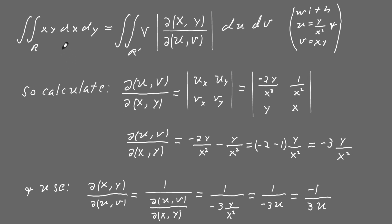Now we want to evaluate this integral over that region. The formula tells us we have to put the integrand in terms of u and v. Fortunately, x times y is just equal to v, so this term in the integrand is simply v. You could verify this by inverting the equations for u and v to get x and y as functions of u and v and multiplying them — you still just get v. Next we have to evaluate the Jacobian.